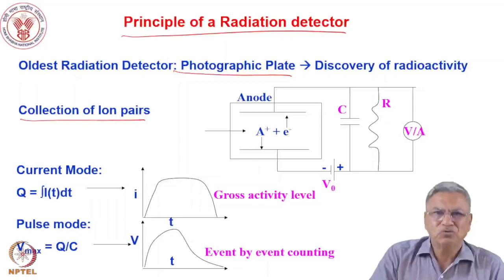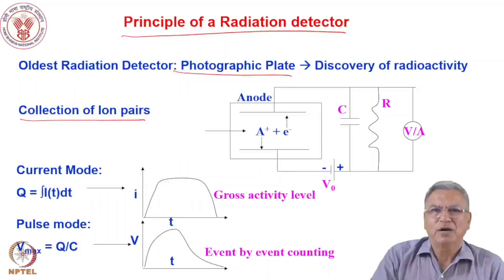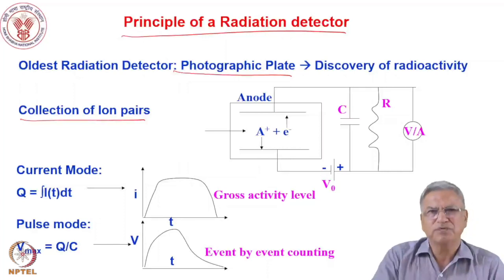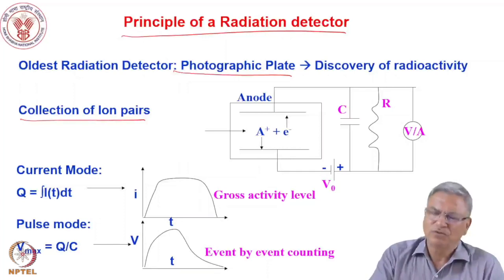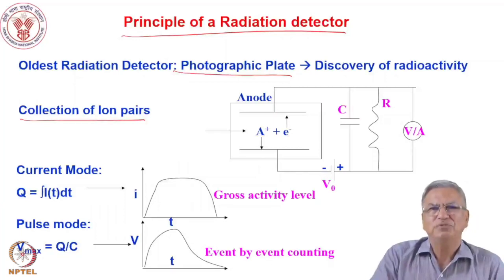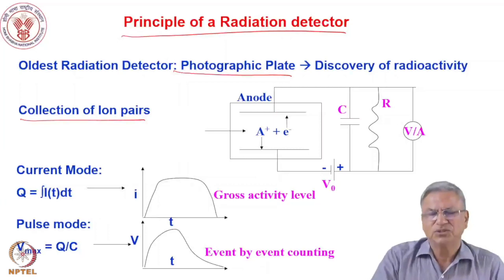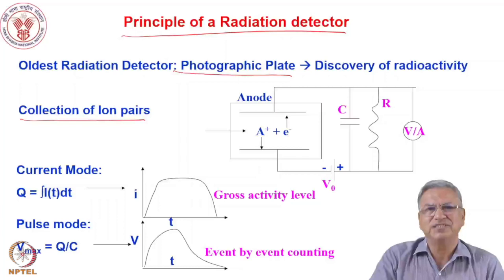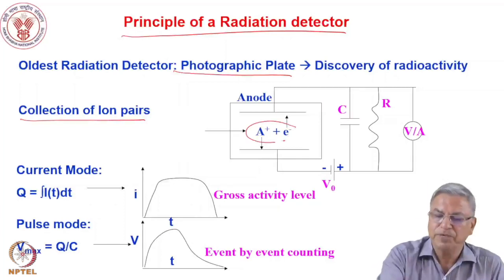When we want to go for quantification of radiation levels, we use more advanced detector systems. The basic principle of detection of radiation is collection of ion pairs. Heavy charged particles cause ionization, and that ionization gives you ion pairs. If you collect the ion pairs, you can detect the signal. The electrons also give you ion pairs. Similarly, gamma rays by secondary means give fast electrons via photoelectric effect, Compton scattering, or pair production. Neutrons also give rise to heavy charged particles via nuclear reactions.